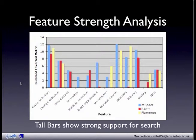For example, you can see that it is slightly harder to change your selection in Flamenco compared to RB++ and MSpace. Analysis reveals that in Flamenco it requires four moves from the user to change their mind, whereas in MSpace and RB++ it only requires two moves. You can also see that RB++ outperforms MSpace in multiple selection.